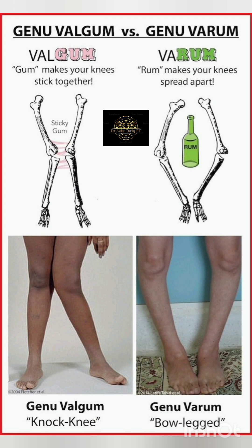Genu valgum occurs when the knees angle inward and cause the lower legs to move outward. This can lead to joint pain and walking issues. It can be memorized by its own term — 'valgum,' where 'gum' means sticky. So both knees are sticky, causing a knock knee position.